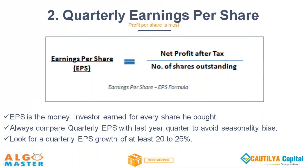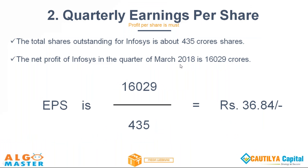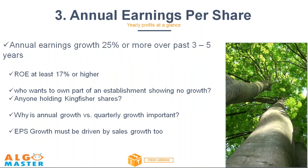The next topic is annual earnings. Here is an example: Infosys has 435 crore shares, with net profit in the quarter ending 2018 of around 16,000 crores — so Infosys made an EPS of 36 rupees in that quarter. Annual earnings is the combination of all the last four quarters' cumulative growth. Generally great companies will make an earnings of at least 25 percent year on year — this is a very key and critical parameter.